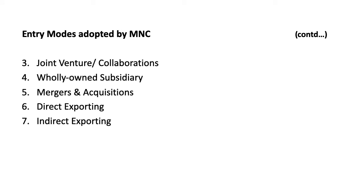The third entry mode adopted by MNCs is joint ventures or collaborations. A joint venture may be necessary due to legal restrictions on foreign investment. It reduces the cost and risk of investment for an MNC. Sometimes joint ventures are the only way of entering markets that are highly competitive and saturated. Examples of joint ventures in India are ICICI Lombard, Max New York Life Insurance, and Tech Mahindra.